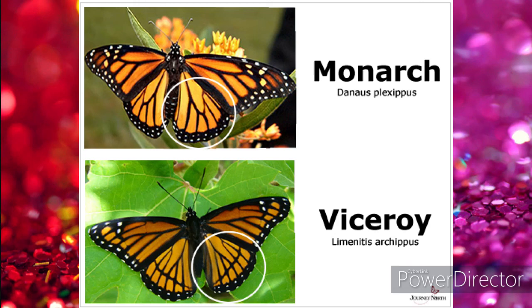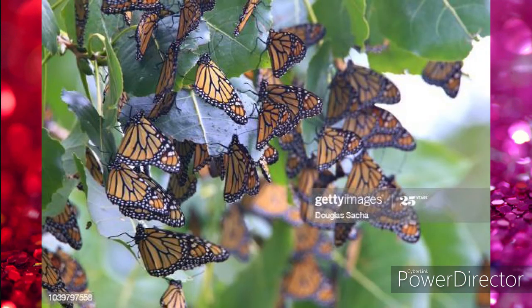He wanted to show in his project whether a bird would eat monarchs or not. He found out that the starling bird would prefer eating only a monarch. Later research showed that the viceroy butterfly had copied the monarch, and this project won him first division in the zoology department and third overall position in the county science fair.